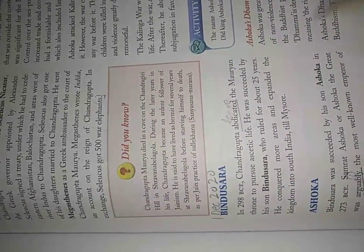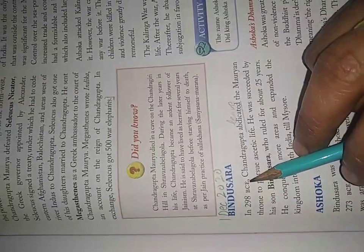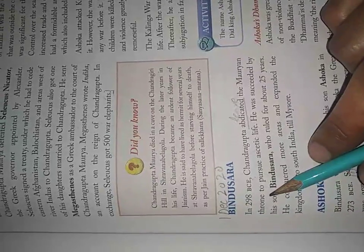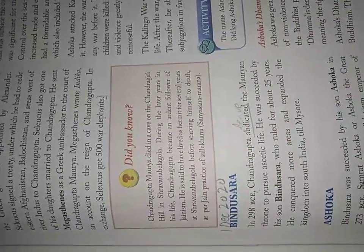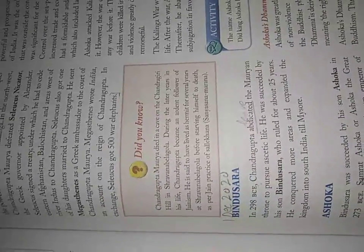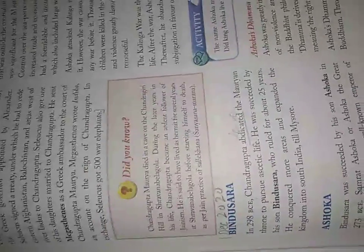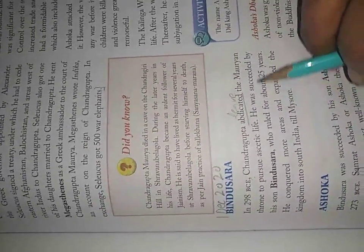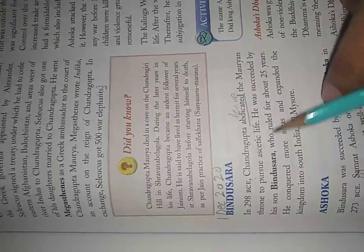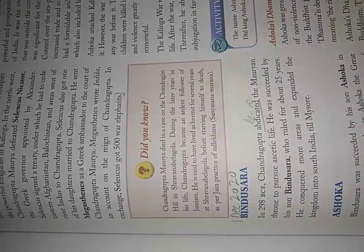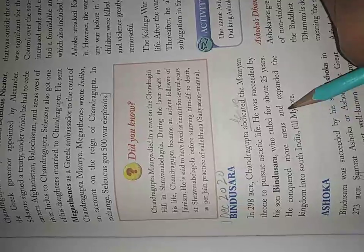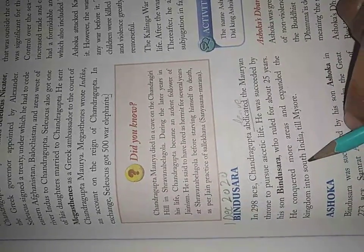In 298 BCE, Chandragupta abdicated the Mauryan dynasty throne to pursue an ascetic life. He was succeeded by his son Bindusara, who ruled for about 25 years. Bindusara conquered more areas and expanded the kingdom into South India.